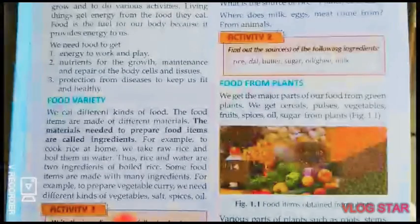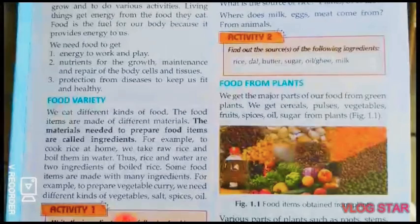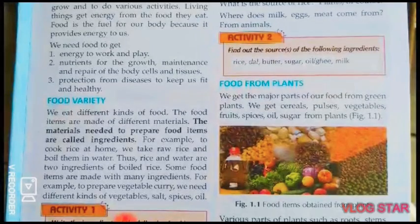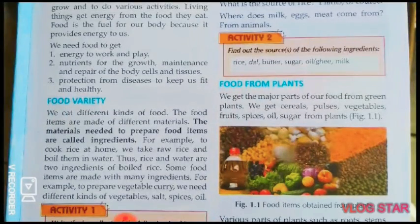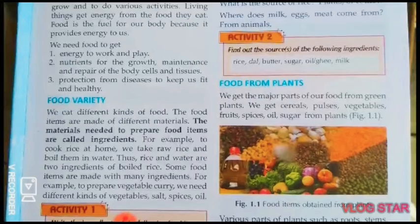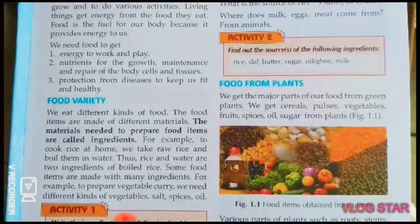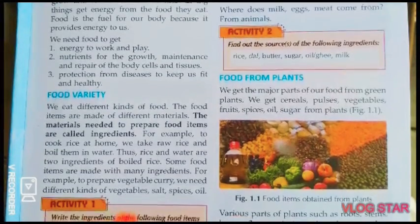Some food items are made with many ingredients. For example, to prepare vegetable curry we need different kinds of vegetables, salt, spices, oil, etc.